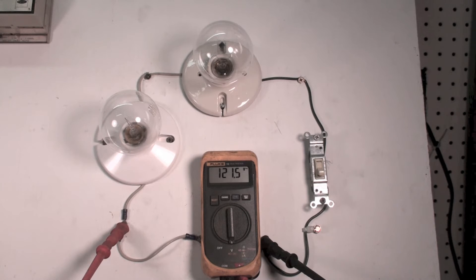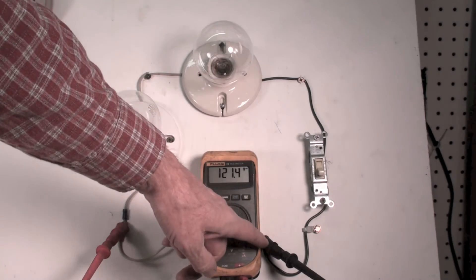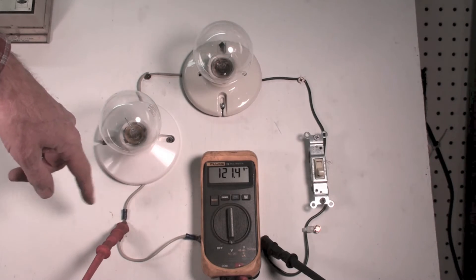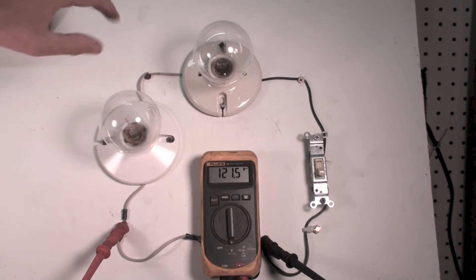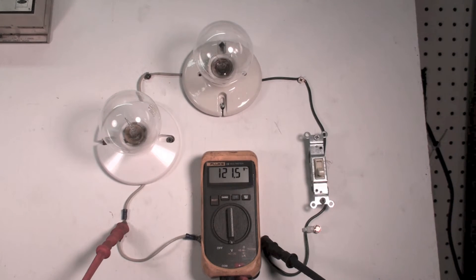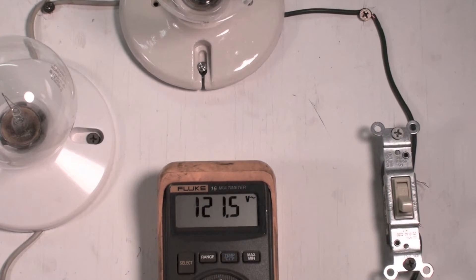But in this case, the meter is allowing a parallel flow through the meter itself. Power is coming from here, going into the meter, through the meter, and coming back to here - even though no power is going to the circuit. I actually have a circuit with my meter.